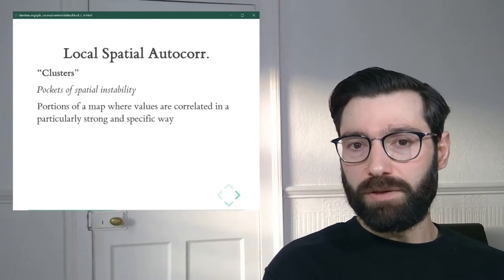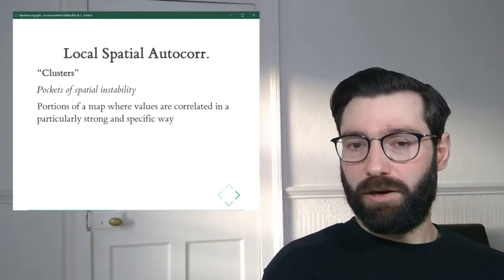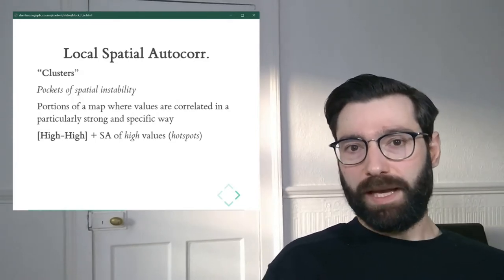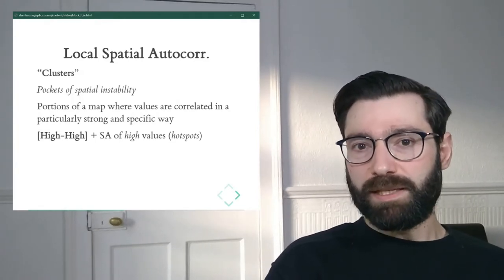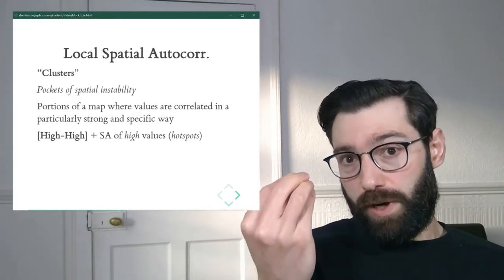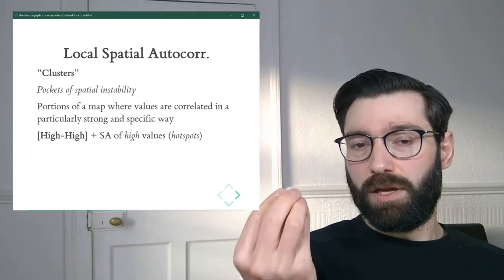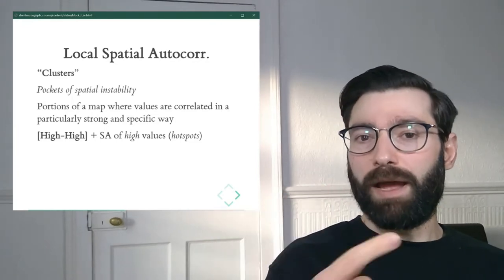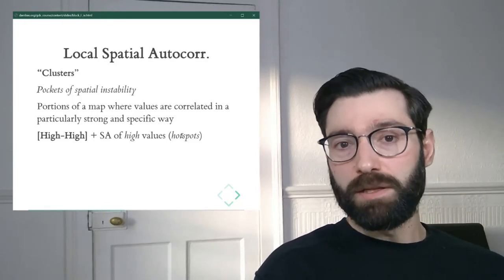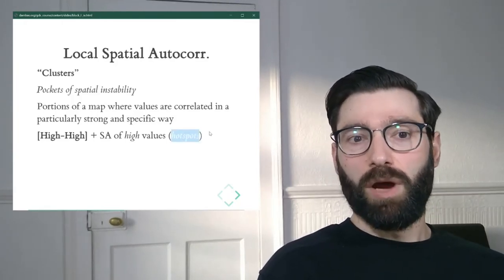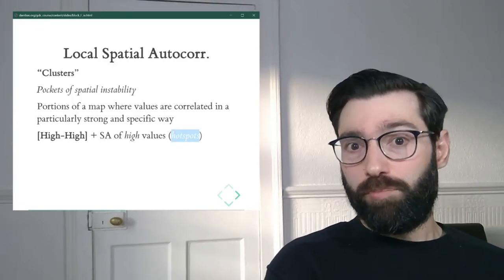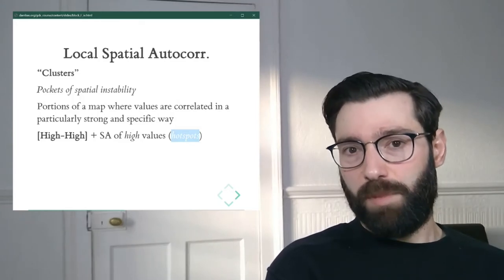Before that, let's look into the types of local spatial autocorrelation that we can run into. The first one is what we will call the high-high class. This is an area where there is a focus, a foci, or an observation, a polygon, with high values surrounded by high values as well. You might run into this in the literature under the term hotspots.